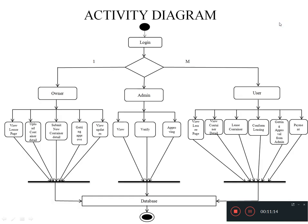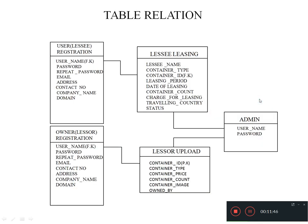This is the activity diagram for my application. After registration, they have to log in. After login, the owner will view the lessor page and upload the container details, submit new container details, get approval from the admin, and view the updates. The admin can view, verify, and approve the lessee and lessor. After login, the user can view the lessee page. This is the table relationship diagram for my application.